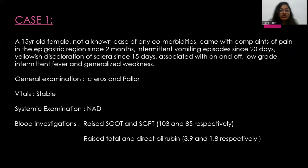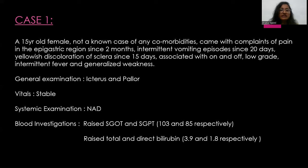My first case is a 15-year-old female with no known comorbidities, who presented with complaints of epigastric region pain since two months, intermittent vomiting episodes since 20 days, yellowish discoloration of sclera since 15 days, and associated on-and-off low-grade intermittent fever and generalized weakness. On general examination, there was icterus and pallor. Vitals were stable and systemic examination was normal. Blood investigations showed raised liver enzymes and raised total and direct bilirubin.